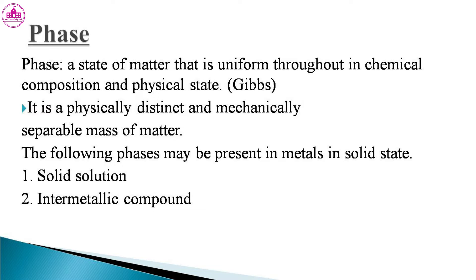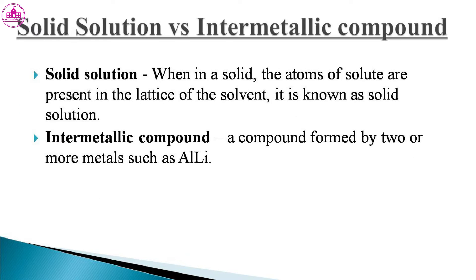The phases present in metals include solid solution and intermetallic compound. In a solid solution, the atoms of solute are present in the lattice of the solvent. An intermetallic compound is a compound formed by two or more metals, such as aluminum or lithium.